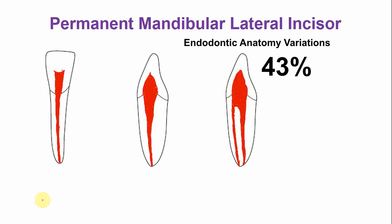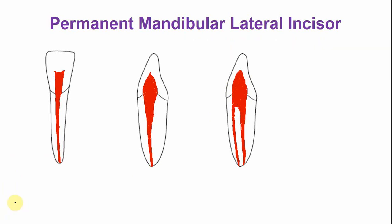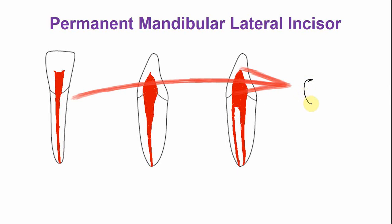Looking at the root canal in cross sections: in the cervical cross section, the root is oval in shape in the cervical portion, and the canal is located in the center. The canal is usually oval in shape; this is the labial side and this is the lingual side.